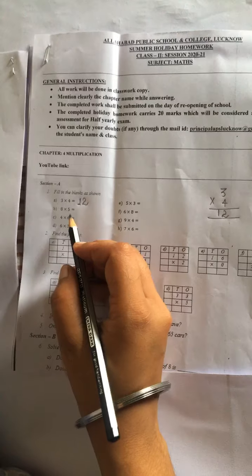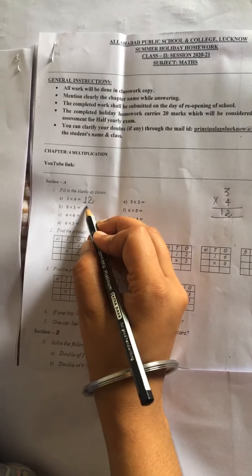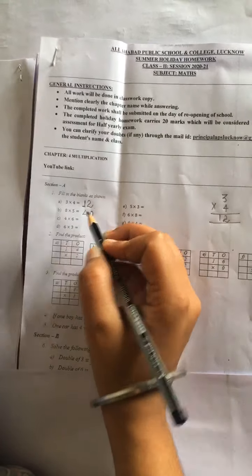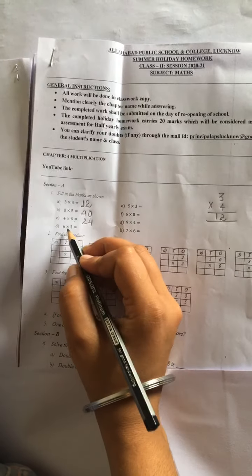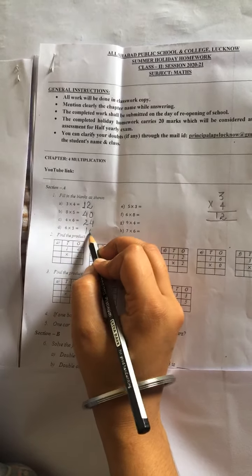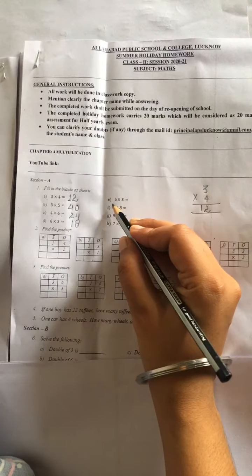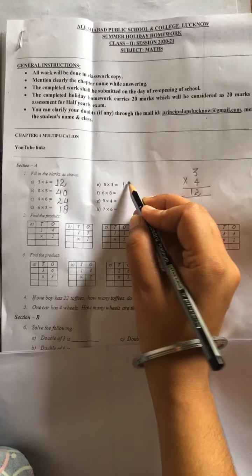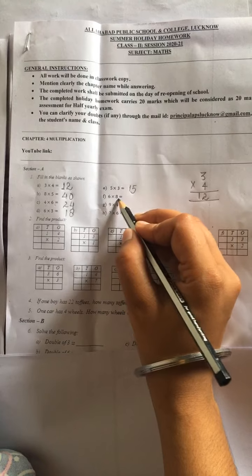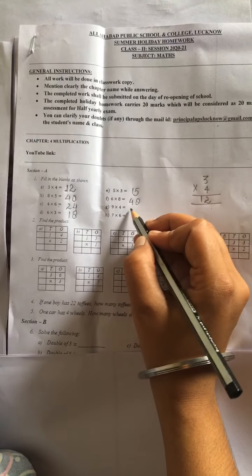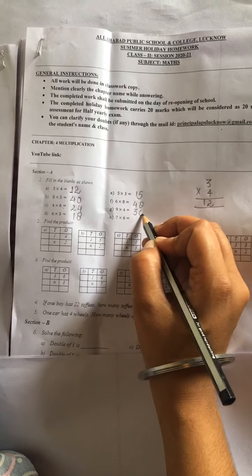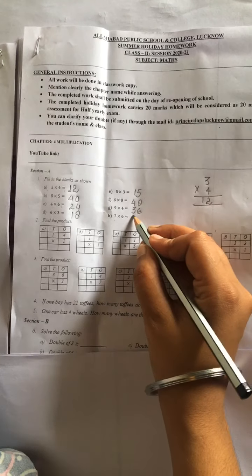Now B part. 8 times 5 is 40. 4 times 6 is 24. 6 times 3 is 18. 5 times 3 is 15. 8 times 6 is 48. And 9 times 4 is 36. 7 times 6 is 42.